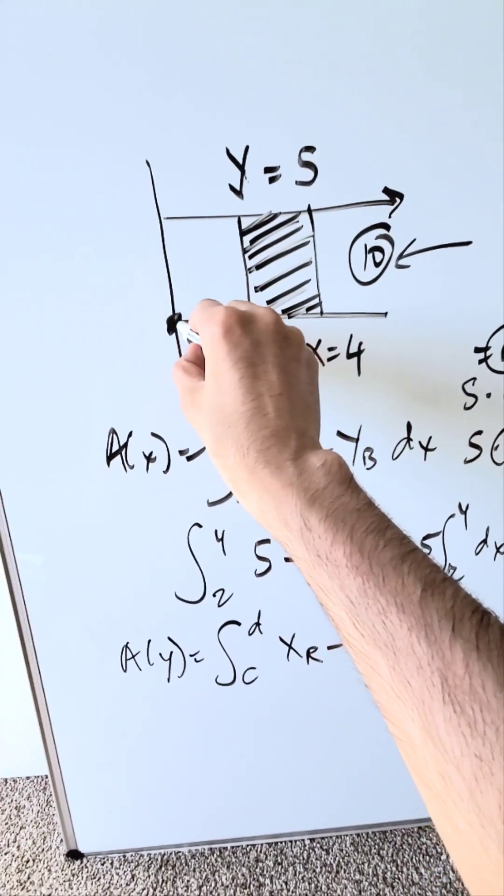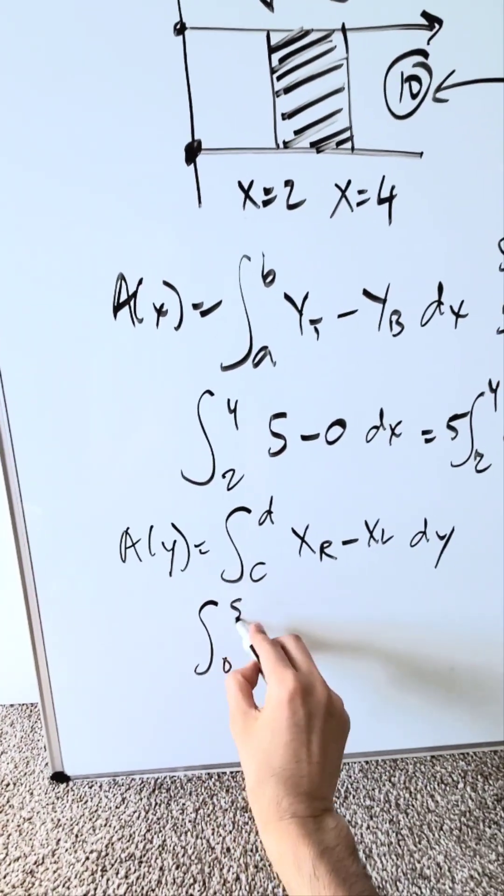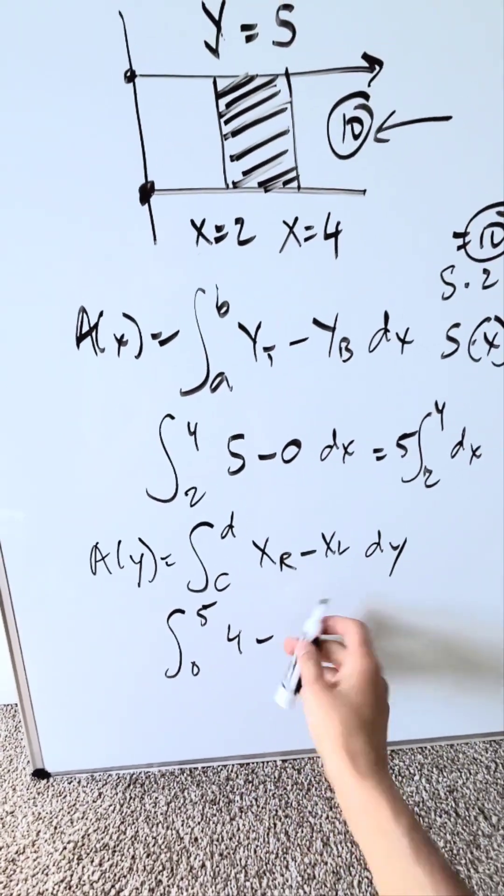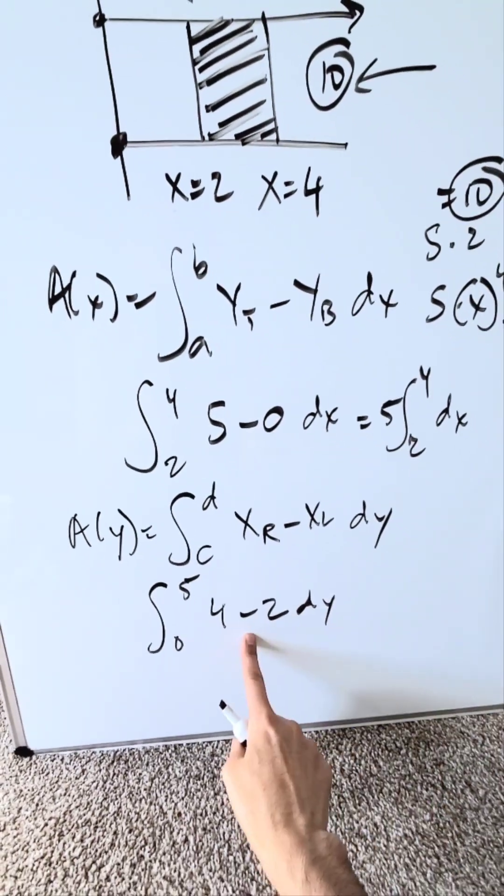What do we have over here? My lower boundary is 0, my upper is right here, 5, 0 to 5. My limit, 0 to 5. What's my right boundary? It's x equals 4, vertical line. That's not a function, but it is indeed a line. x equals 2 is my left, and dy.